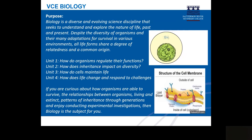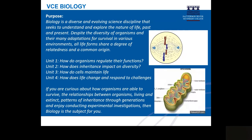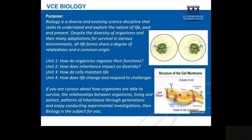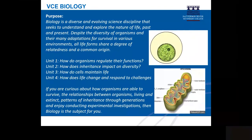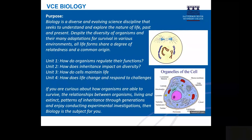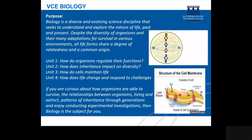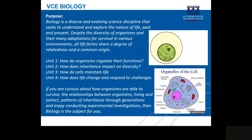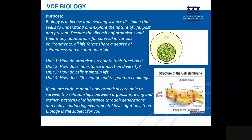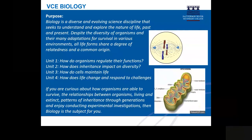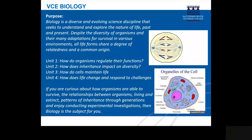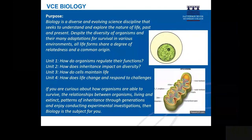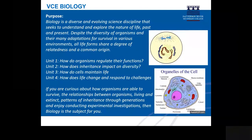In Unit 1, students examine the cell as the structural and functional unit of life, from the single cell to the multicellular organism. They learn about the processes of photosynthesis and cellular respiration. Students focus on the cell cycle, learning about the growth, replacement and death of cells and the role of stem cells in our bodies. They explore how systems function in plants and animals and consider the role homeostatic mechanisms play in maintaining an animal's internal environment.